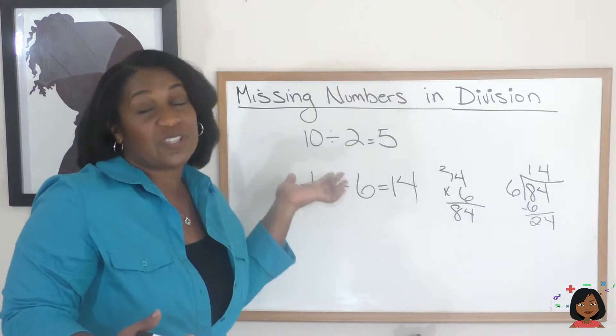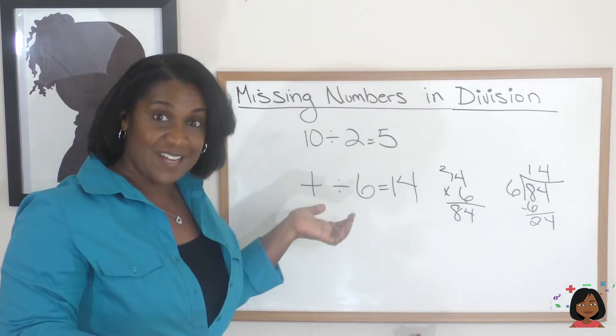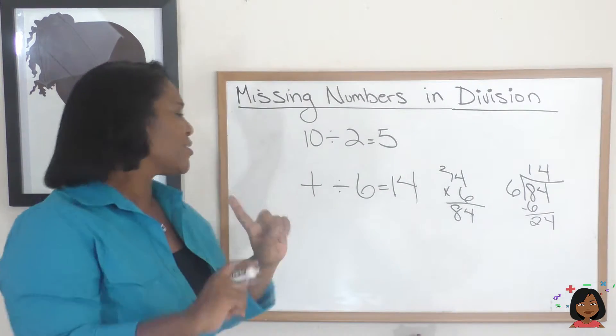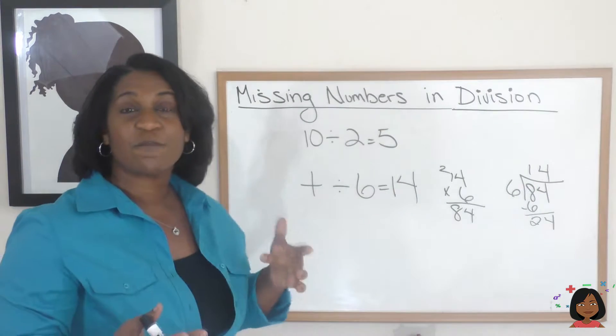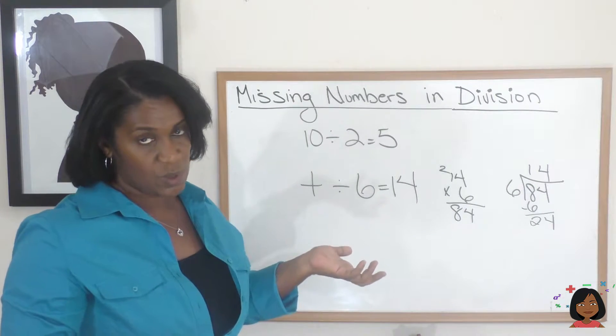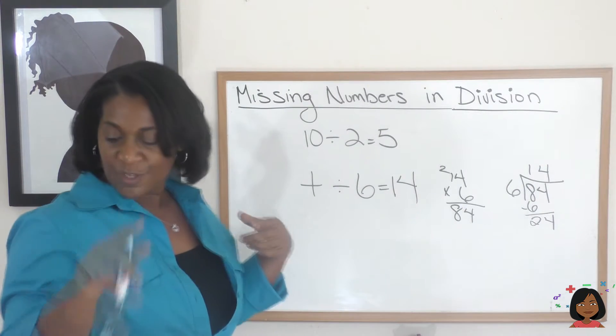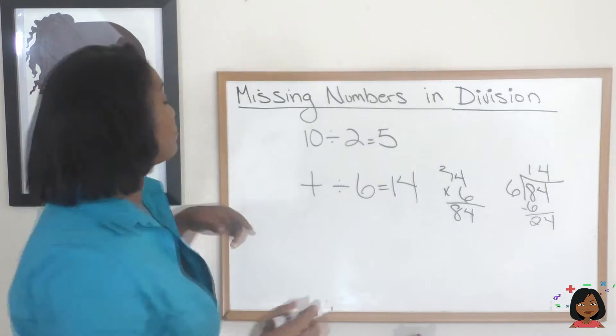We used multiplication to find the missing number, which this time was our dividend. But what if we had a missing divisor? What would we do in that case? Let me give you some numbers.